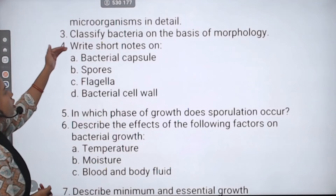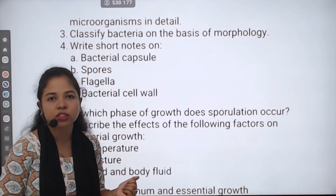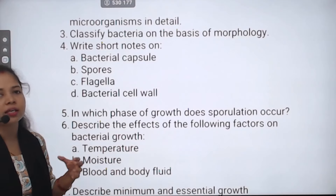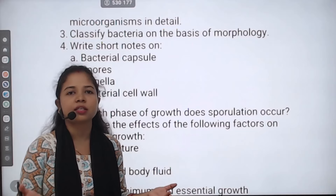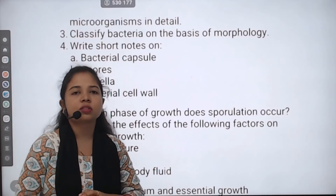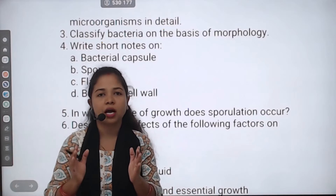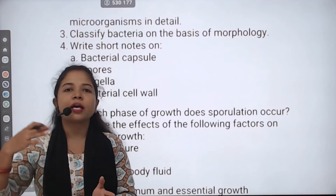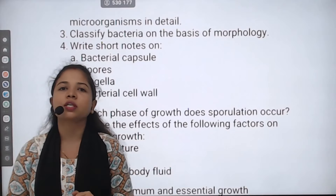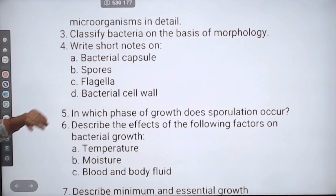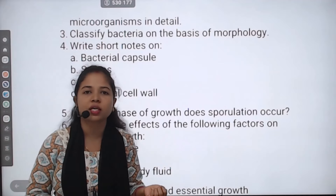Write short notes on the following: bacterial capsules and spores. For short notes, you don't need to write excessively — write according to the marks allocated. If you write 10 good lines instead of 5 scattered ones, you will get better marks. Write about bacterial capsules here, and also write about bacterial spores.